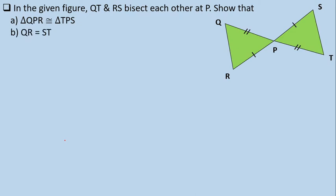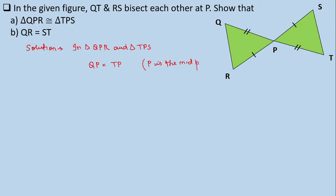We have to show that triangle QPR is congruent to triangle TPS, and QR equals ST. In triangle QPR and triangle TPS: QP equals TP, because P is the midpoint of QT; and side RP equals side SP, because P is the midpoint of RS.